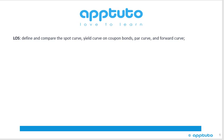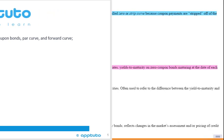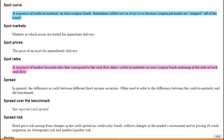This LOS is to define and compare the spot curve, yield curve on coupon bonds, par curve, and forward curve.